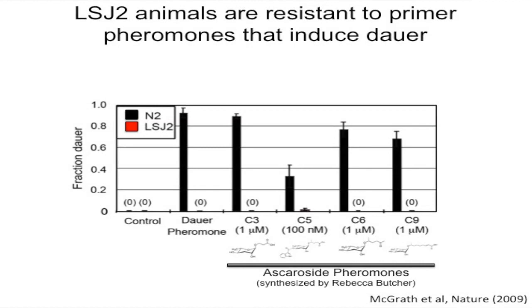We measure this: N2 animals readily go into dauer in response to dauer pheromones, and the components have been identified — four ascarosides named C3, C5, C6, and C9. Our collaborator Rebecca Butcher at Florida has synthesized these. The LSJ2 animals no longer go into dauer in response to any of these pheromones — not because they can't enter dauer (raising the temperature still induces it), but specifically they don't respond to pheromones.